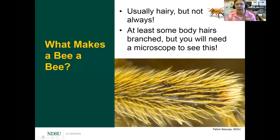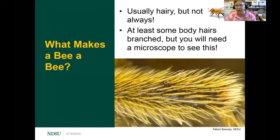Another characteristic of bees is that they're usually hairy — not all bees, but most of them — and that's one of the things you can use to identify them. If you look closely in the picture, you can see that the hairs are branched. You'll need a microscope to see this, around 10 to 20X. Bees have branched hair, whereas a wasp would have a simple hair with no branching.